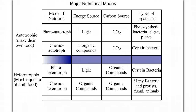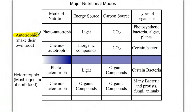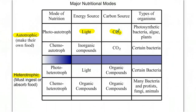Bacteria are very diverse not just in habitat but also in metabolism. There are basically four types of ways to get energy, within two broad groups. Autotrophs make their own food; heterotrophs have to find food. Photoautotrophs use light as their energy source and carbon dioxide as their carbon source. Organisms in this category include photosynthetic bacteria, algae (which are protists), and plants.